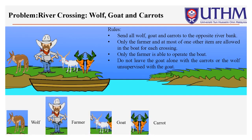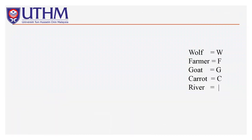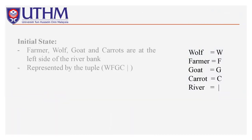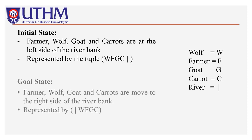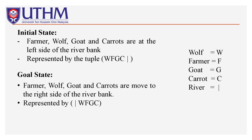This is the wolf, farmer, goat, and carrots. Wolf is represented by W, farmer is F, goat is represented by G, carrot is C, and the river is represented by slash. For the initial state, the wolf, farmer, goat, and carrots are all at the left side of the river bank, represented by the tuple WFGC and slash.